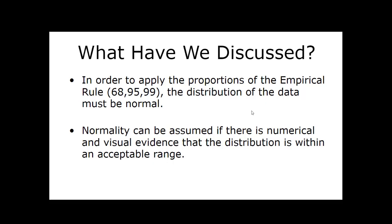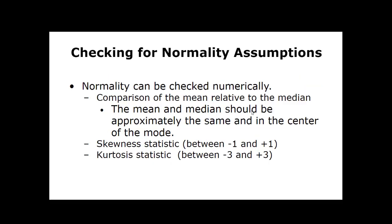In order for this to happen, the distribution of the data must be normal — it has to have a certain shape. If that cannot be checked or assumed, none of this will work. Normality can be assumed if there's numerical and visual evidence that the distribution is within an acceptable range. No real data is going to be perfectly normal — it just has to be normal enough.